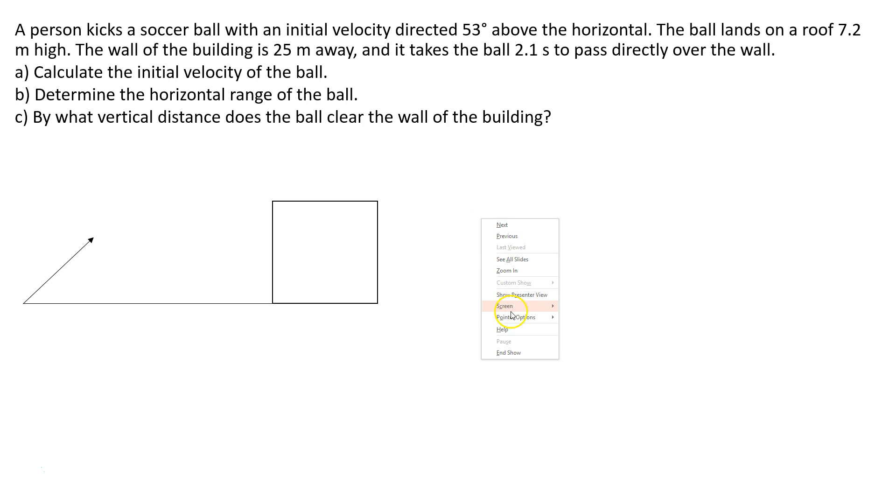So I'm going to put in the values that we have. 53 degrees above the horizontal. So it's kicked, it goes something like this. It lands on the roof. This distance here is 25 meters.